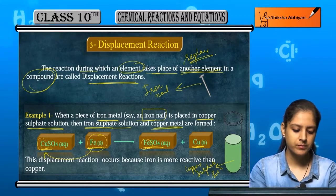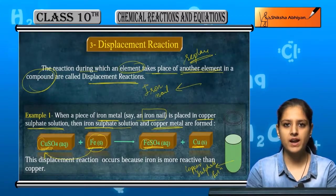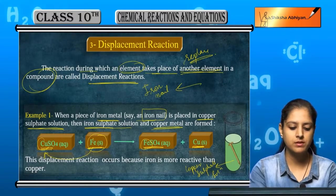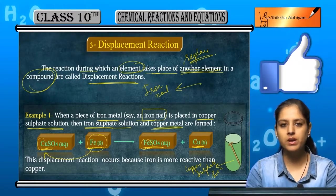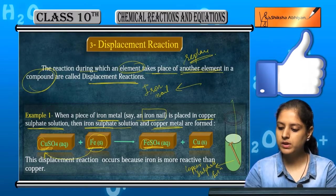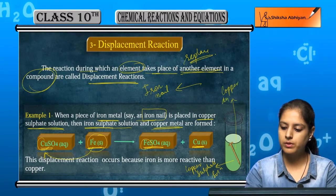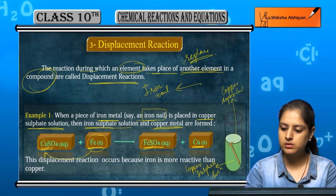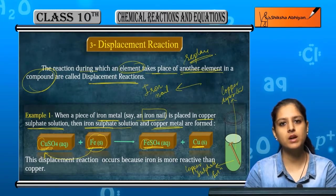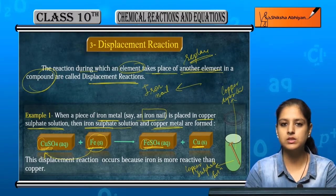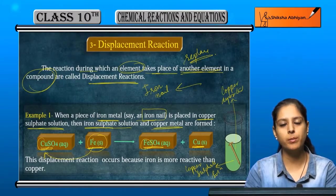When I add it in this solution, it displaces copper from copper sulphate and deposits copper on the iron. The iron nail converts from silver color to copper color.